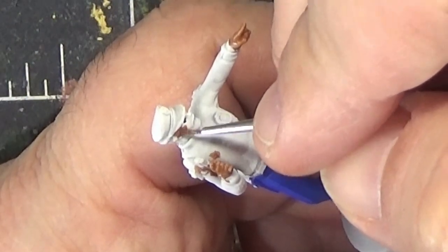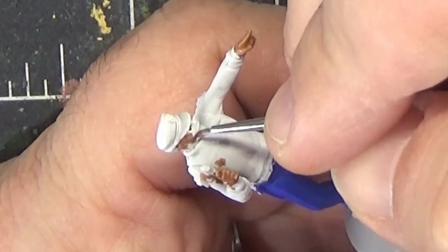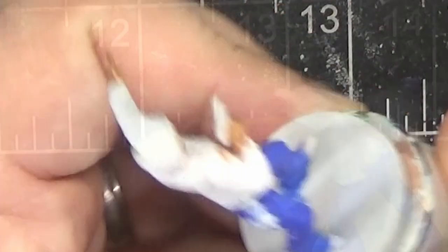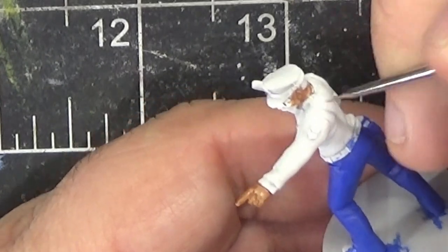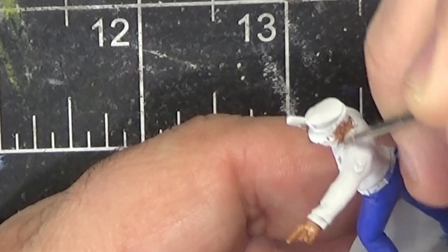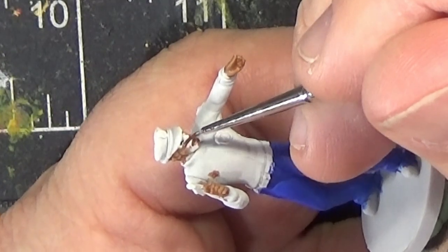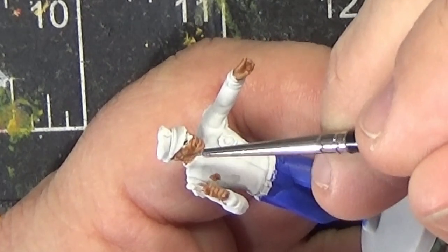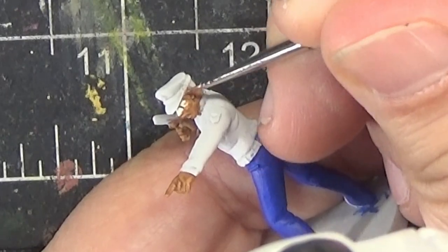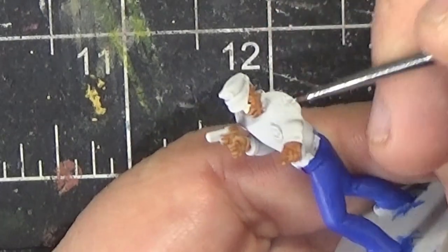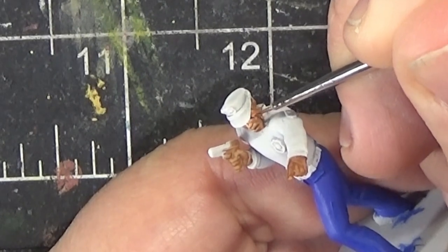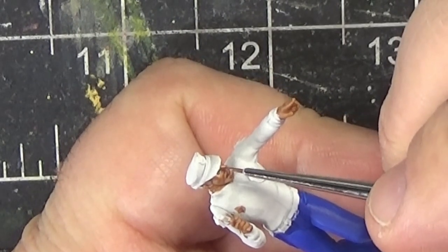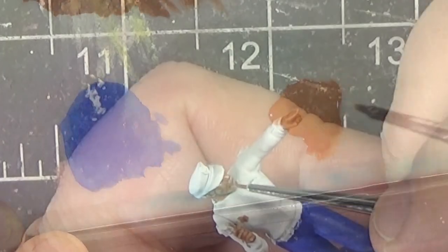Now moving on to the face, we'll take care to block in the whites of the eyes and really shape the eyes and take care of any overflow that we had on the black pen marks. At this point I wasn't really sure what I was going to do with the mouth on this sculpt because it appears to be open, so I just painted it the skin color and decided to deal with it later.